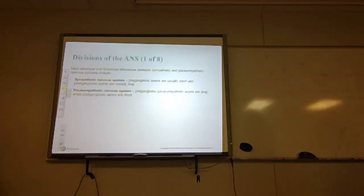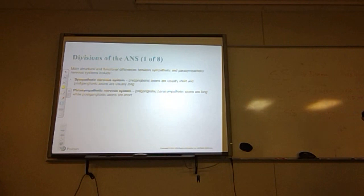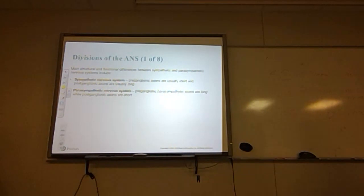The sympathetic nervous system has pre-ganglionic axons that are short and post-ganglionic axons that are usually long. The parasympathetic is the inverse: pre-ganglionic axons are long and post-ganglionic axons are short. So sympathetic: short pre-ganglionic, long post-ganglionic. Parasympathetic: long pre-ganglionic, short post-ganglionic.